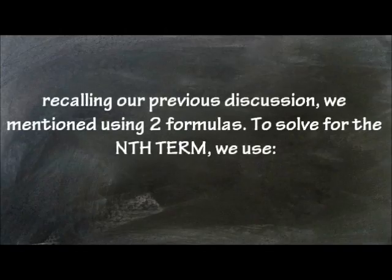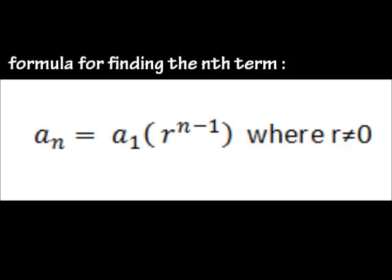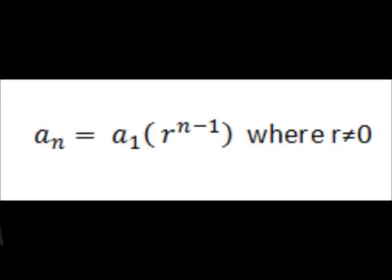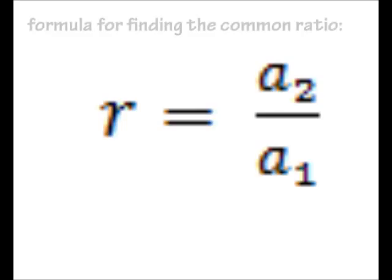Recalling our previous discussion, we mentioned using two formulas. To solve for the nth term, we use a sub n equals a sub 1 times r raised to n minus 1, where r is not equal to 0. And to find the common ratio, we use the formula r equals a sub 2 over a sub 1.